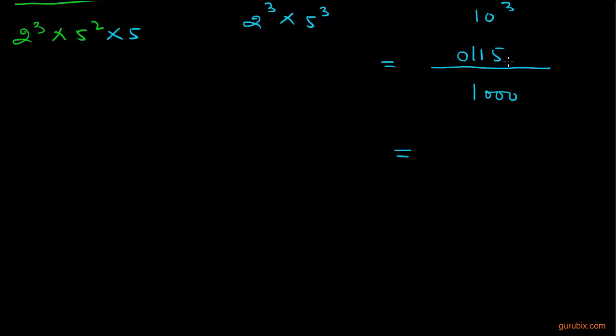So these are 3. We shall count from right to left 1 to 3 times, 3 digits from right to left. So we shall put the decimal point between 0 and 115. This is our decimal expansion.